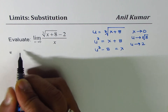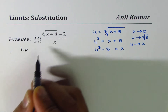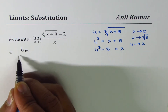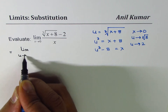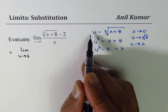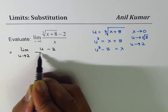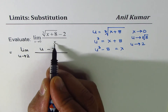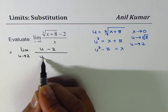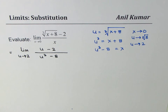We can write this question as: limit as u approaches 2 of (u minus 2) divided by (u³ minus 8). Do you see that? So that becomes a familiar and much simpler question to work with.